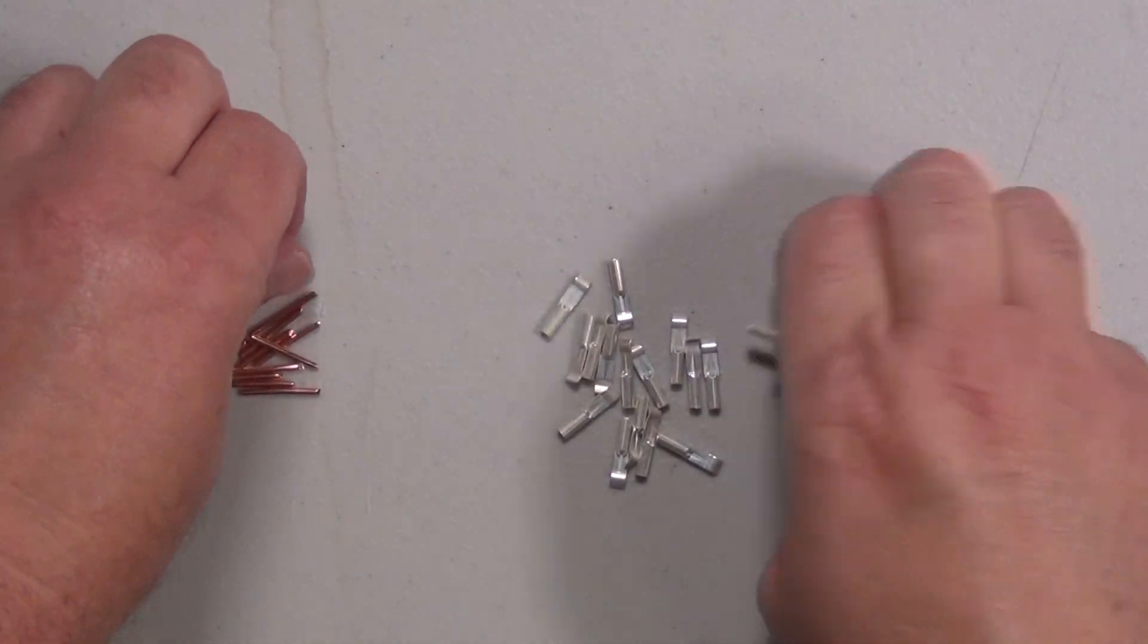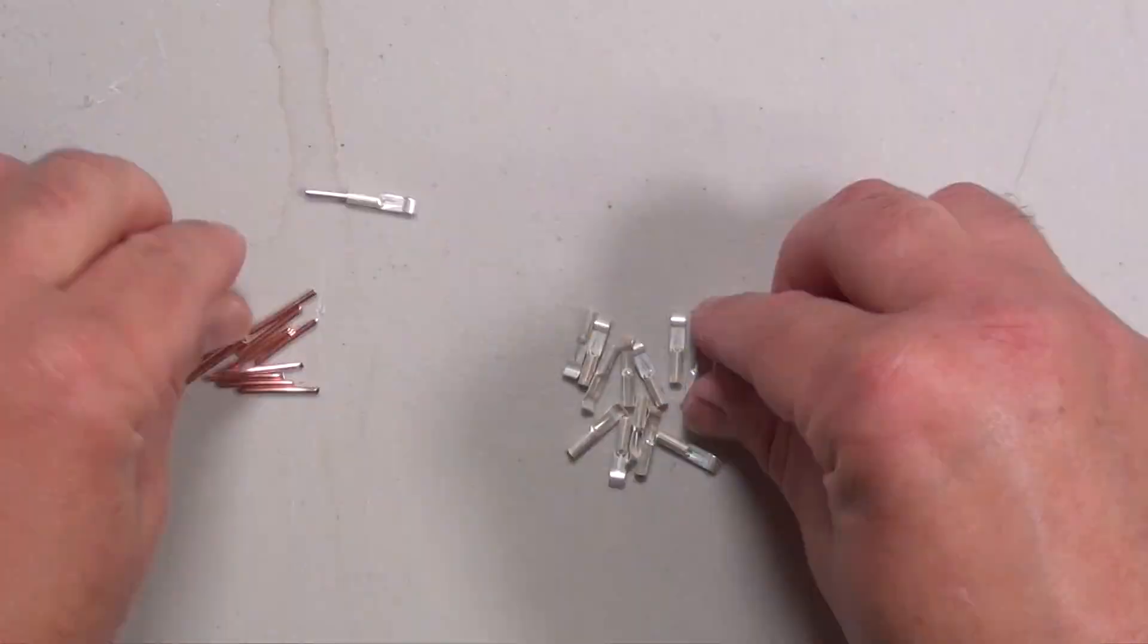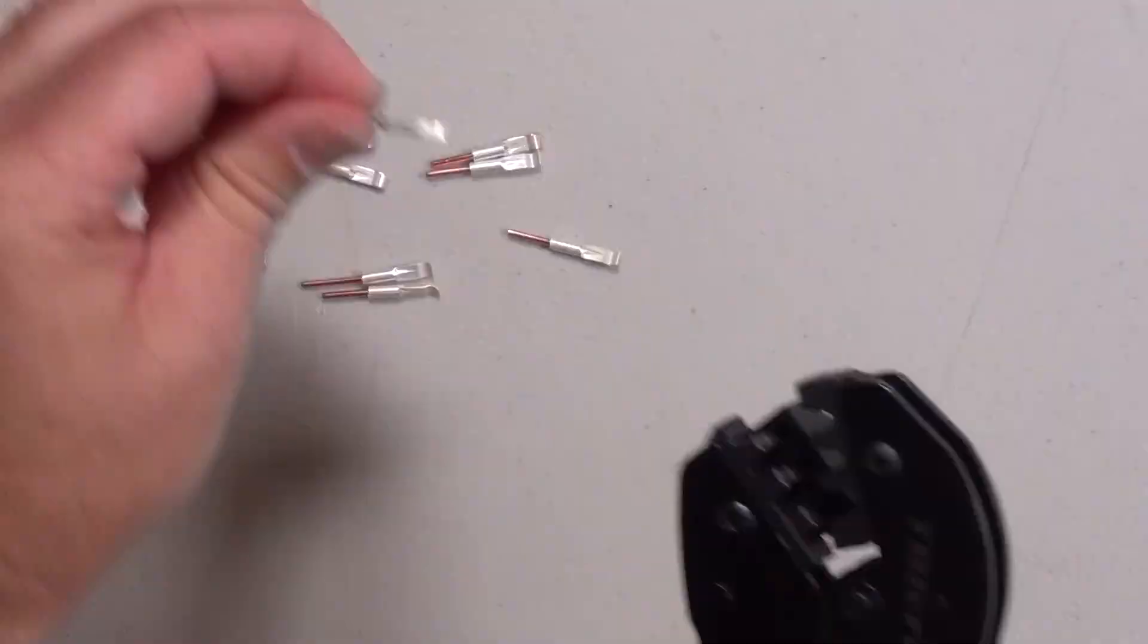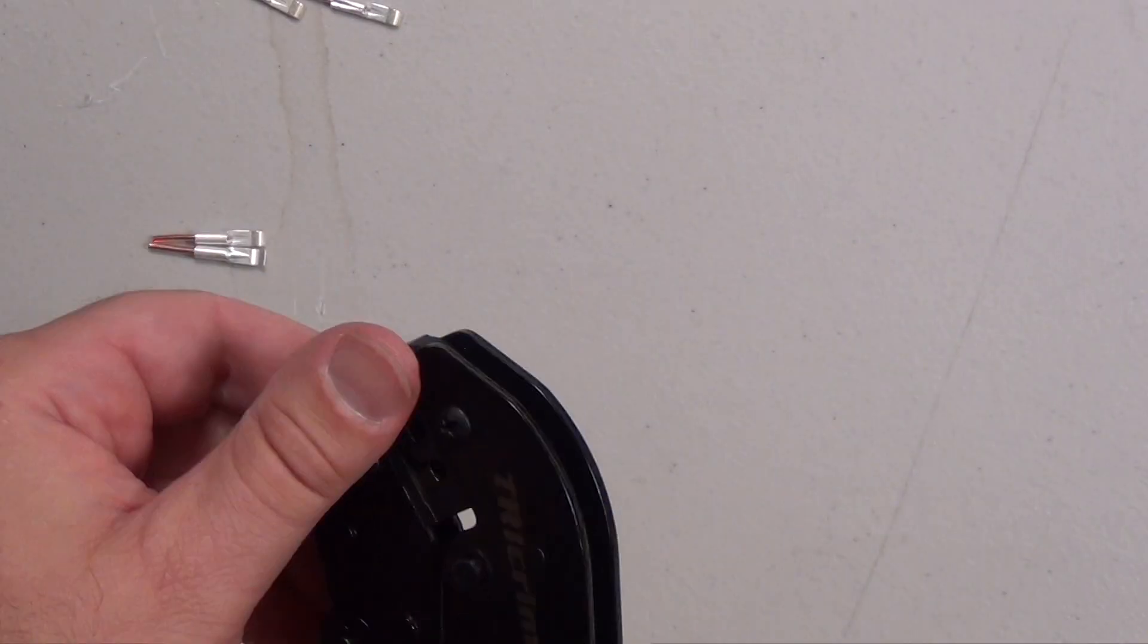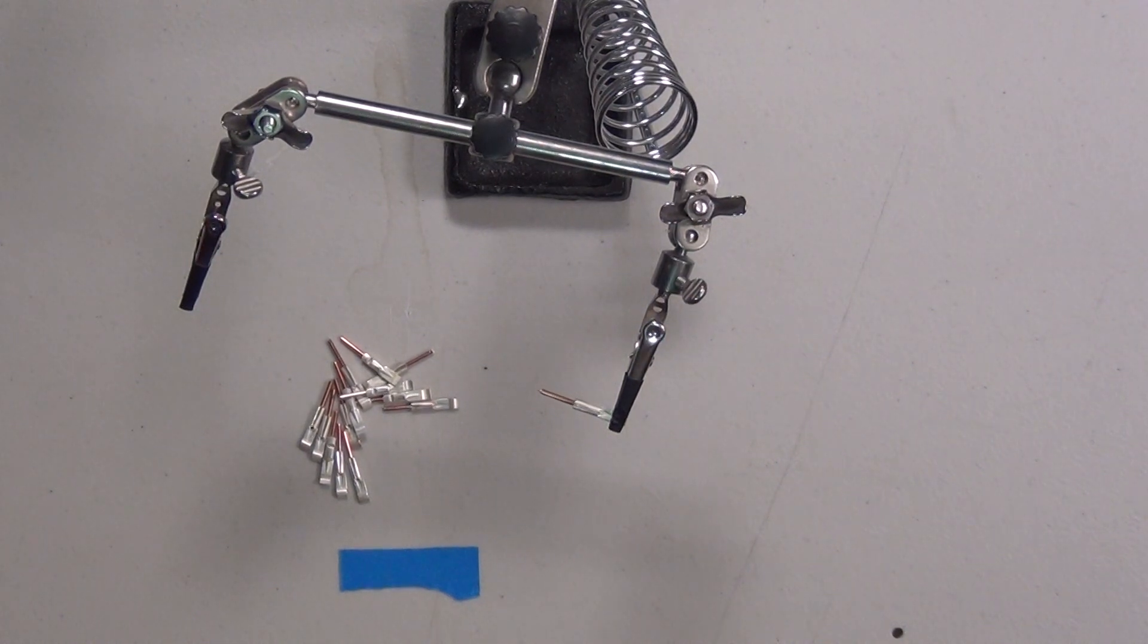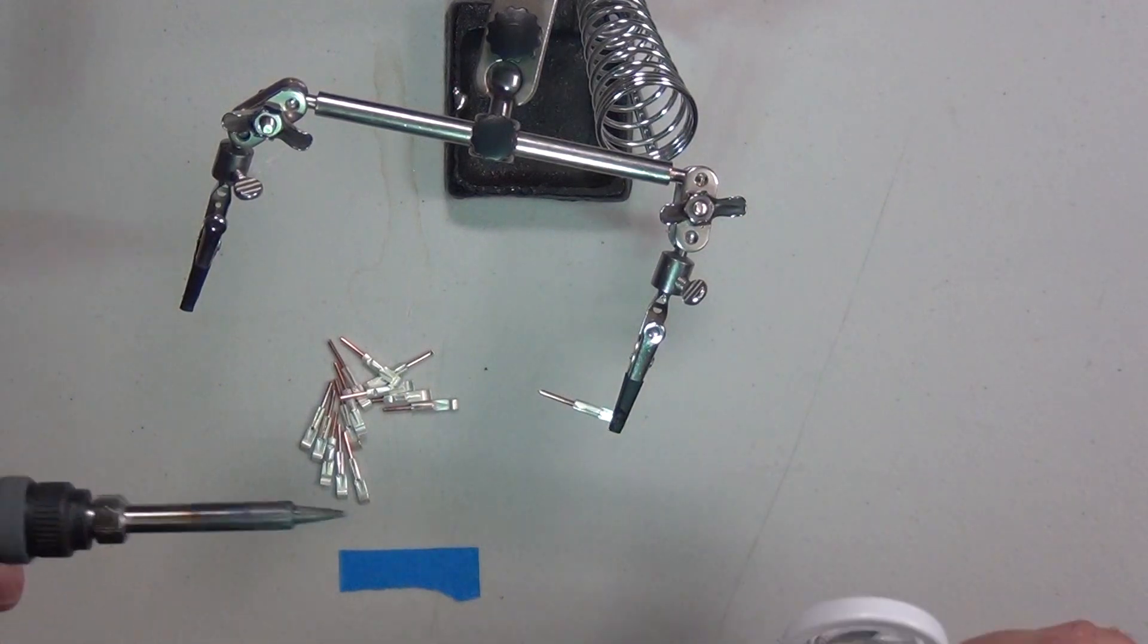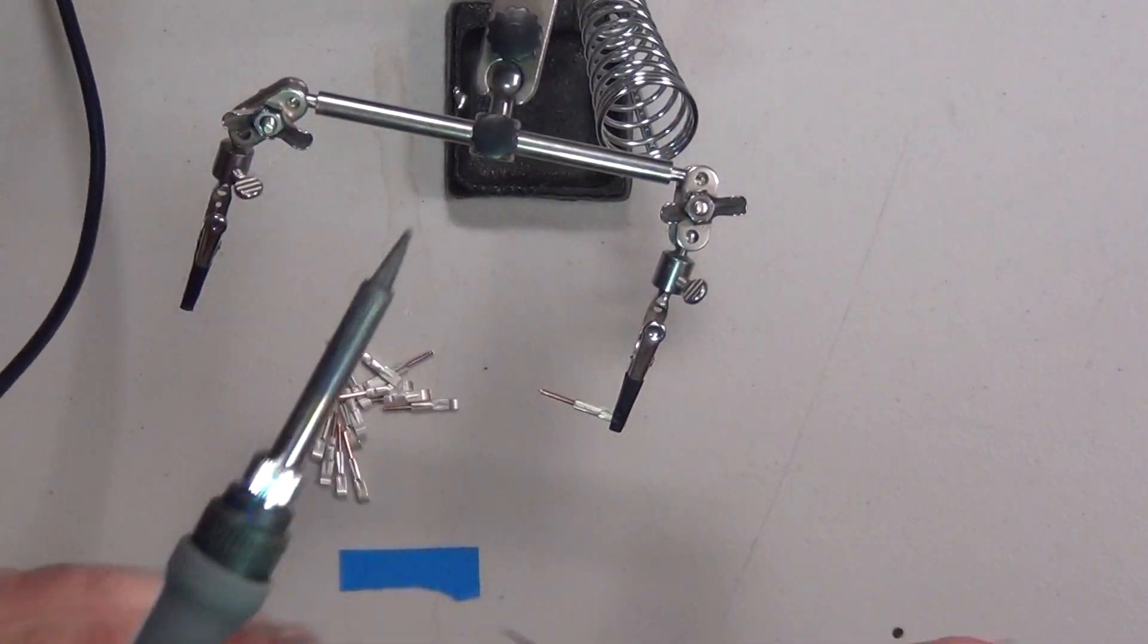Now we're going to crimp the connectors onto the wire. Just for some extra security, now we're going to solder the connectors to the wire. Mind you, I suck at soldering.